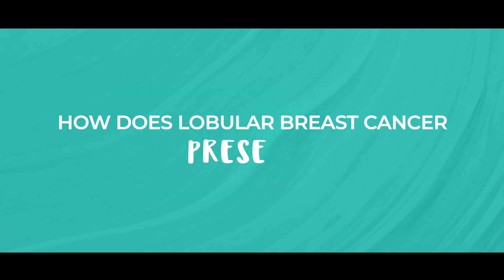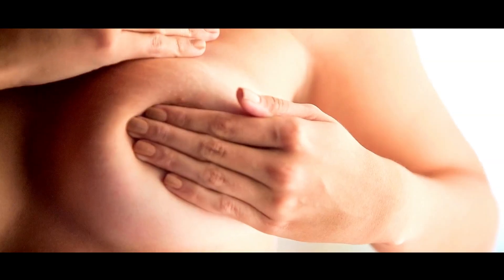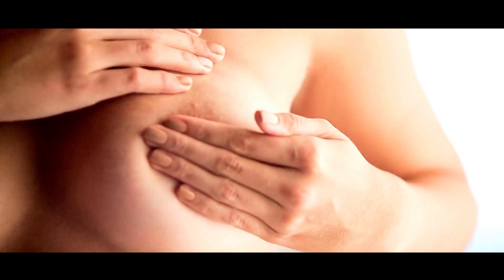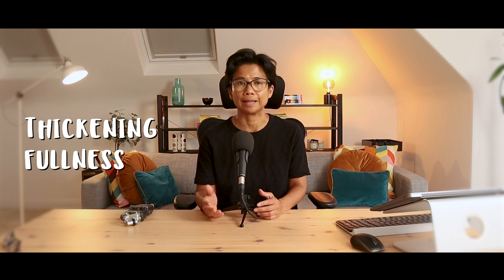How does lobular breast cancer present? Lobular breast cancer often presents differently compared to other breast cancer types. Breast cancer can present in different ways, including as a lump, thickening, dimpling, and a change in breast shape. Although lobular cancers can present as a lump, it may be less obvious or discreet, and manifest as a thickening or a fullness in a specific breast area instead. This elusive nature can make it difficult to detect through regular breast exams as well as mammograms.